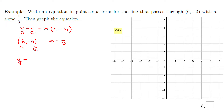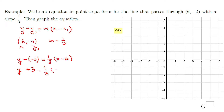So we get: y minus (-3) — I suggest using parentheses — equals m, which is 1/3, times x minus x1, which is 6. Simplifying, this is the equation of the line that goes through (6, -3) with a slope of 1/3.